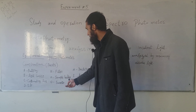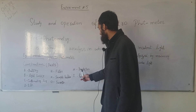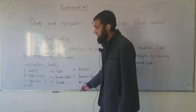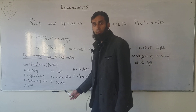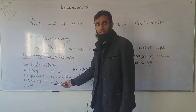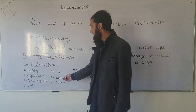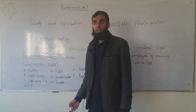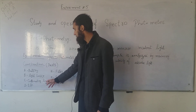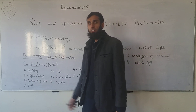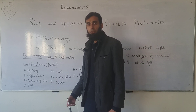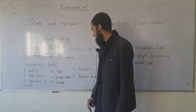We have a sample holder, a detector, and a read-out device. These are the internal parts which we can use, powered by a battery or an external electric supply. We can use a monochromating device which converts light to a single beam.